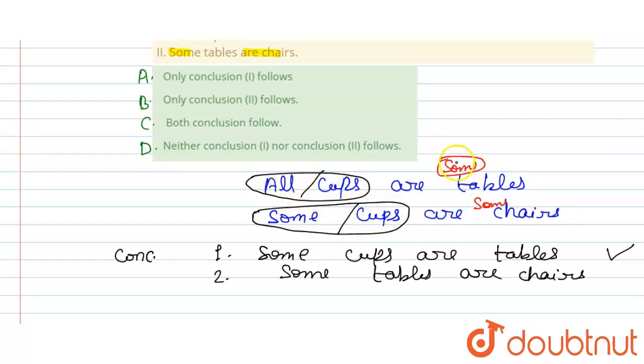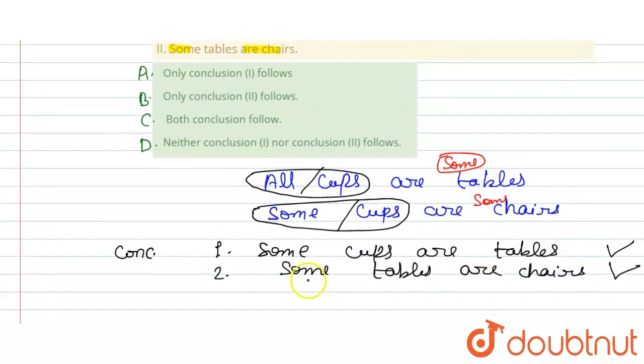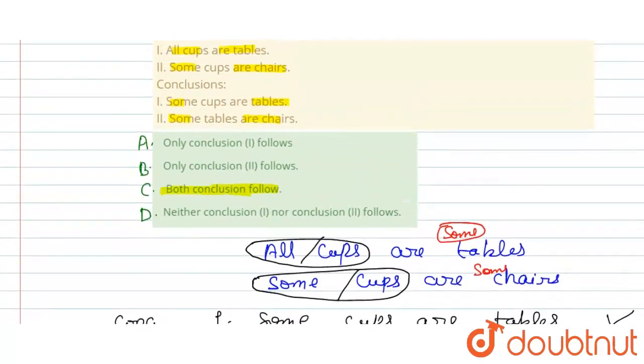So if the conclusion here we can read some tables are chairs, so the second statement we can say some tables are chairs. That means what happens in the two statements, positive statements. We can say our conclusion is some tables are chairs. So option here: both conclusions follow. Okay, so this is the final answer for this question, thank you.